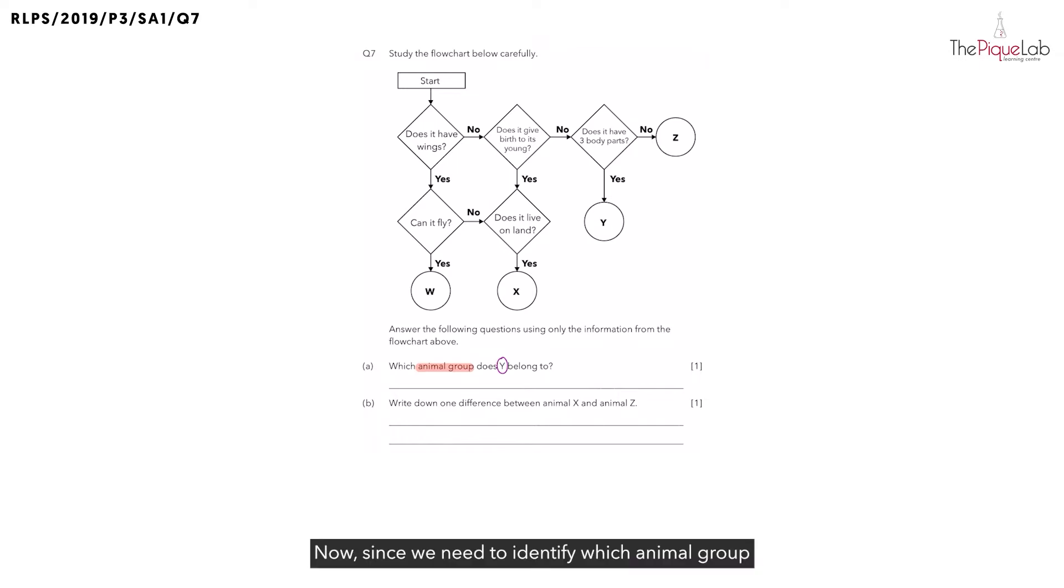Now since we need to identify which animal group does Y belong to, the first thing we must do is to identify the characteristics that animal Y has. But in order to see the characteristics clearly, I want you to take a highlighter.